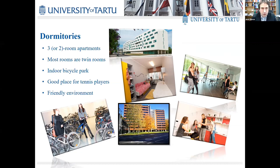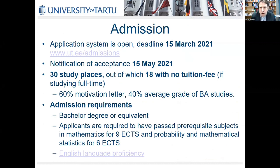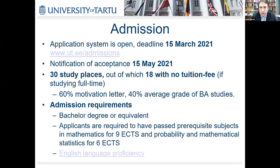For further information, check the program website. The application deadline for all our master's programs is March 15th. We make decisions by May 15th. In Quantitative Economics there are 30 study spaces — 18 with no tuition fee, meaning you get a scholarship covering the tuition fee. For other programs, pay attention to the specific conditions as they differ program by program. The application process is simpler than in many other universities.